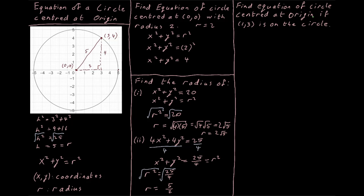We want to find the equation of a circle centered at the origin — at (0, 0) — if the point (1, 3) is on the circle. My center is at (0, 0), and the point (1, 3) — in the door 1, up the stairs 3 — is on the circle. I write down x squared plus y squared equals r squared, and the only piece of information I'm missing is r, which is the distance from the origin out to the circle. So I want to find the distance between (0, 0) and (1, 3), using the distance formula from my log tables.